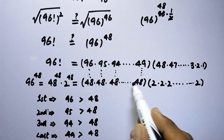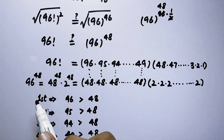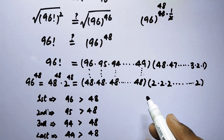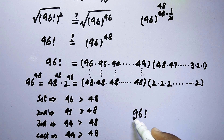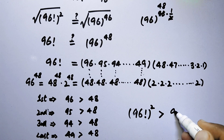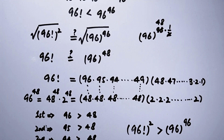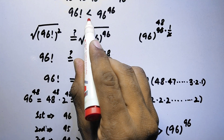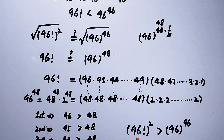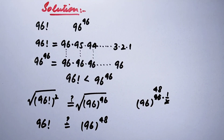So the result is that 96 factorial is greater than 96 to the power 48, meaning 96 factorial to the power square is the larger value compared to 96 to the power 96. To summarize: 96 factorial is a smaller value than 96 to the power 96, but 96 factorial to the power square is greater than 96 to the power 96. I hope you liked the video — please subscribe to my channel for more videos. Thanks for watching. Take care. Bye.